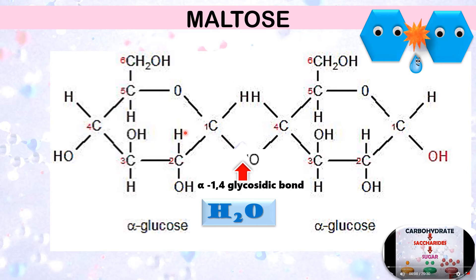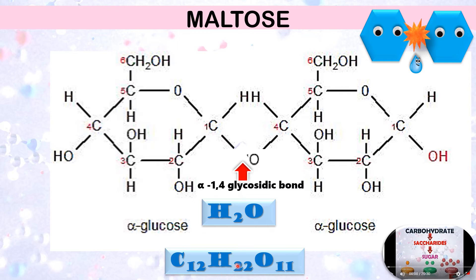Condensation has helped combine two glucose molecules. The formula for maltose or any disaccharide is C₁₂H₂₂O₁₁. The hydrogen and oxygen count is less by two hydrogens and one oxygen because H₂O has been removed in the process of condensation.